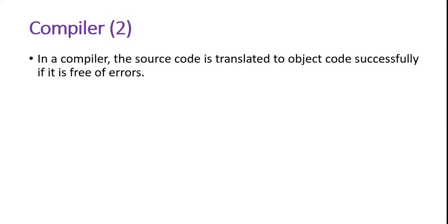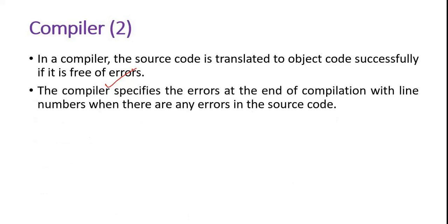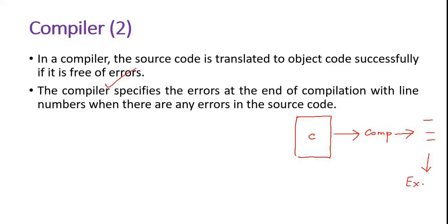In a compiler, the source code is translated to object code successfully only if it is free of errors. If there is an error, your source code cannot be converted to object code. So when writing a C code, you first go for compilation. After compilation, if there is no error, it will allow you to go for execution.